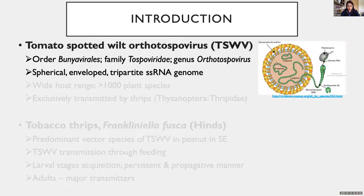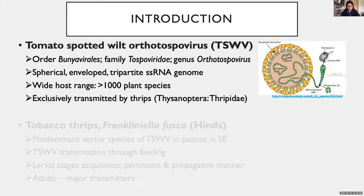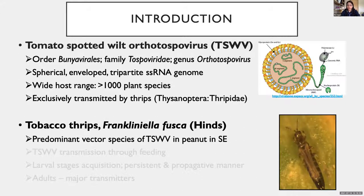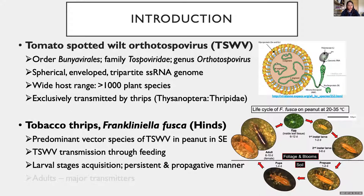Tomato spotted wilt virus, TSWV, is the causative agent of spotted wilt disease in peanut. TSWV has a wide host range and is exclusively transmitted by only nine species of thrips in the family Thripidae. Tobacco thrips, Frankliniella fusca, is the predominant vector species of TSWV in peanut in the Southeast United States. Thrips transmit TSWV through feeding. Only adult thrips that acquired TSWV in their first and early second instar larval stages can transmit the virus. Once acquired, thrips can transmit TSWV throughout their lives, with the virus replicating in their bodies. Adults, with higher mobility compared to larvae, are the major transmitters.